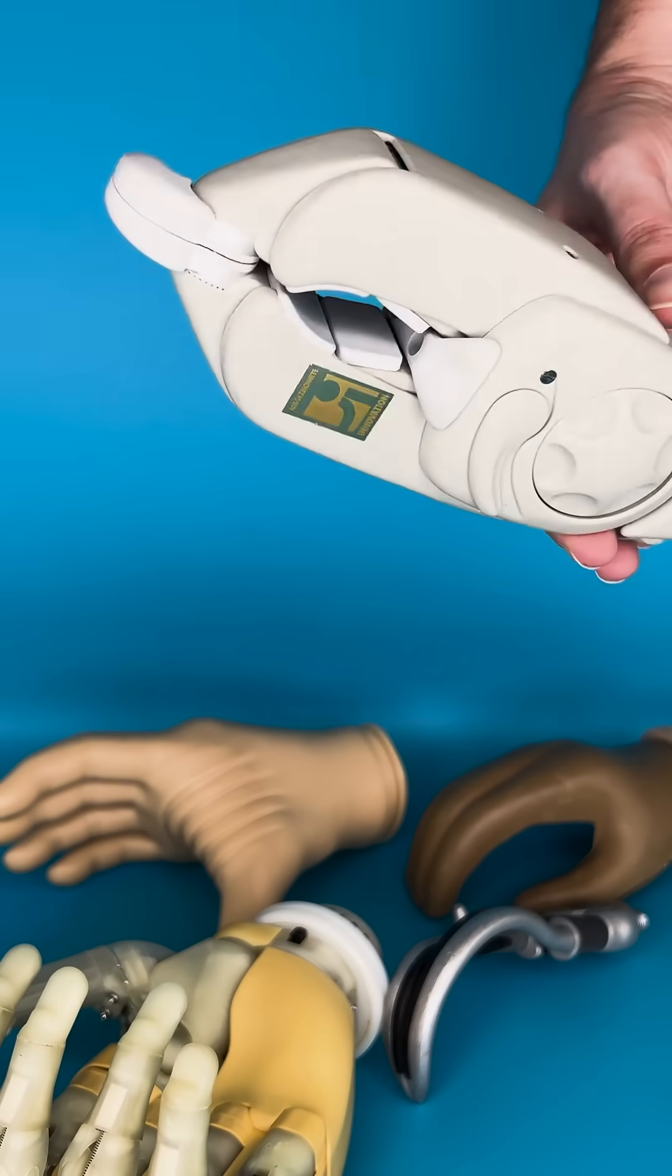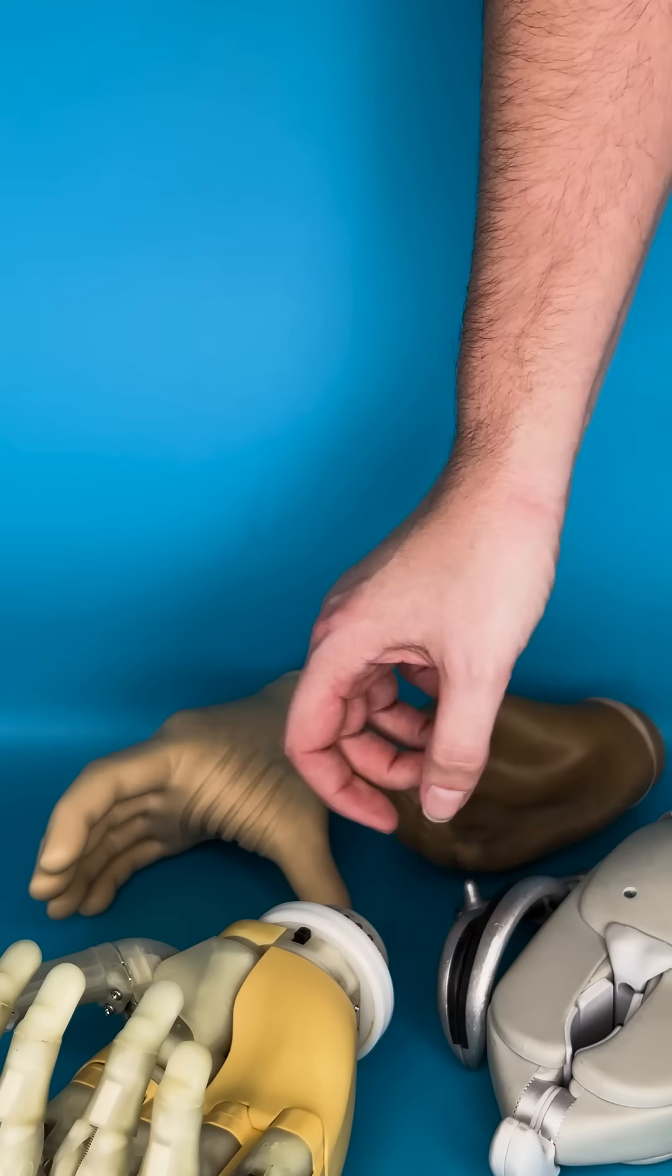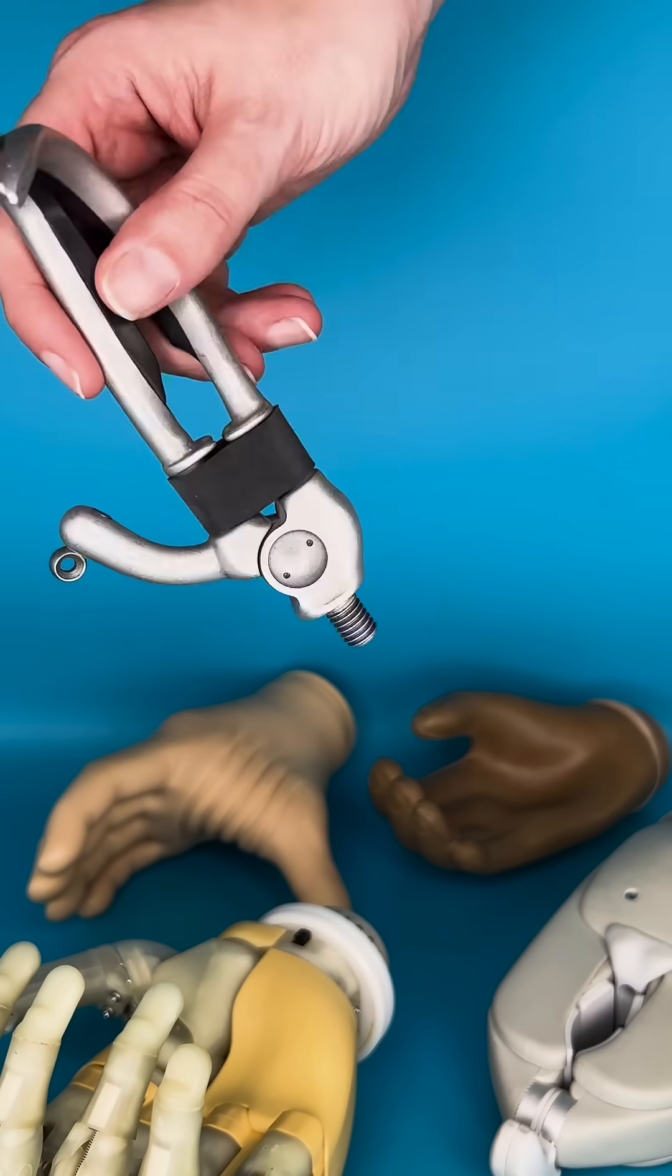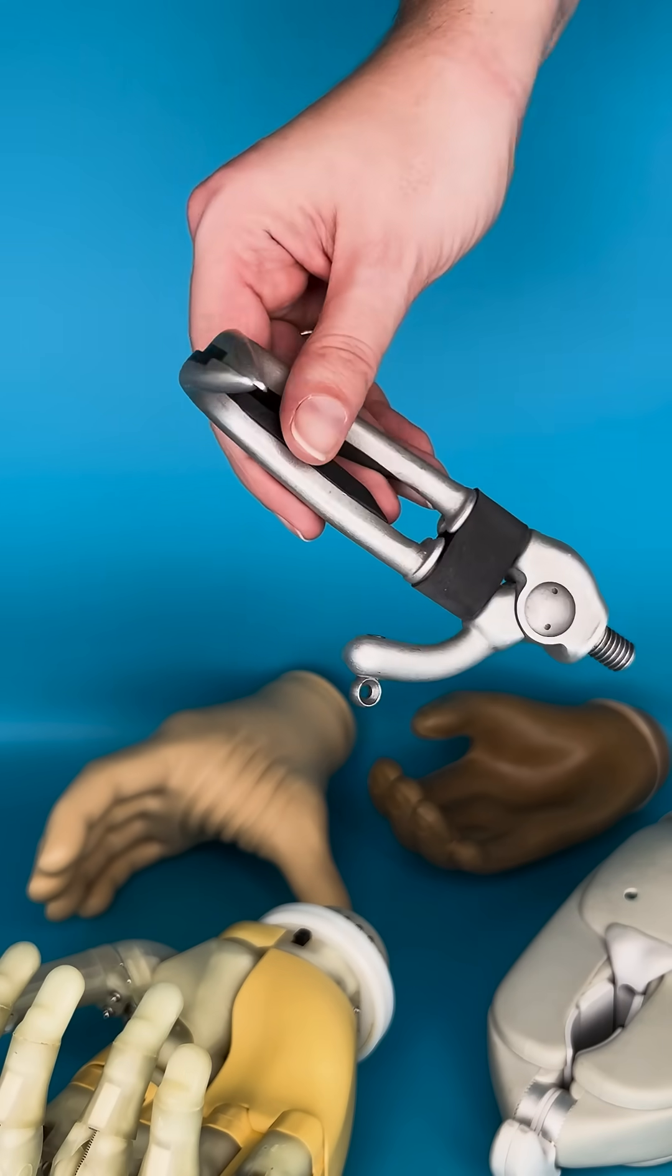For people looking for function we have what we call active prostheses. These tend to be less aesthetic but they can open and close, allowing you to pick up and manipulate objects.